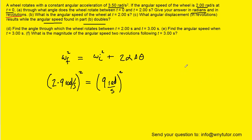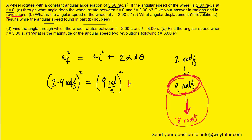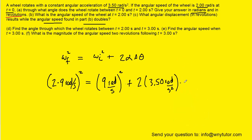We're assuming that after the wheel spins from two radians per second up to nine radians per second, we then double the speed from that point forward. So we want to go from nine radians per second up to 18 radians per second. The initial angular velocity of this time interval is nine radians per second, and the angular acceleration remains 3.5 radians per second squared. We then solve for the change in angular displacement.